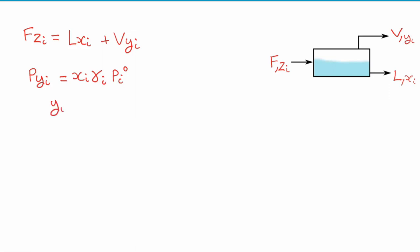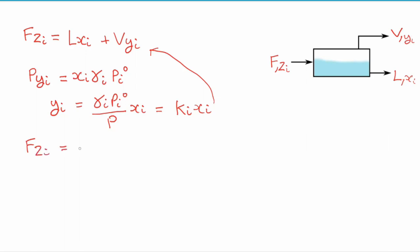We can rearrange this for the composition in the vapor phase, which we often refer to as the K value, so yi equals Ki·xi. We can substitute this expression for yi into our original mass balance, giving us that our feed equals our liquid phase plus our vapor phase, where we're predicting our vapor phase composition from our liquid phase composition.